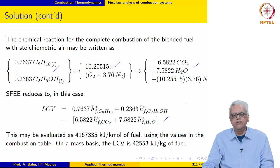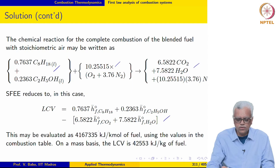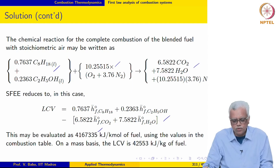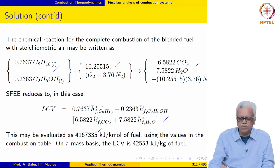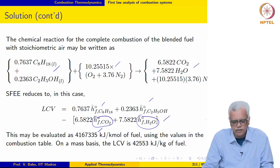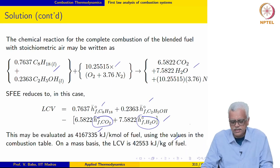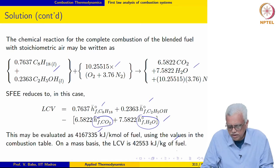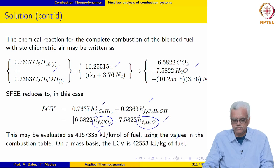Remember, LCV is calculated with reactants and products being at 298 Kelvin. This comes out to be 4,167,335 kilojoule per kilo mole of fuel, using values from the combustion tables. The enthalpy of formation values for CO₂ and H₂O are available in the combustion table. The lower calorific value of the fuel comes out to be 42,553 kilojoule per kg of fuel.